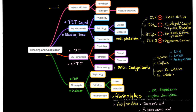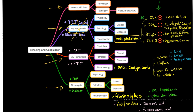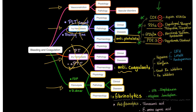Coagulation involves vasoconstriction, primary hemostasis, secondary hemostasis, and fibrinolysis. To inhibit primary hemostasis, you use antiplatelet drugs: cyclooxygenase inhibitors, P2Y12 inhibitors, GP2B3 inhibitors, and phosphodiesterase 3 inhibitors. To tamper with secondary hemostasis, you use anticoagulants — four groups: heparins, warfarin (today's topic), direct thrombin inhibitors, and factor XA inhibitors.